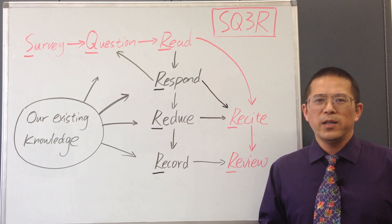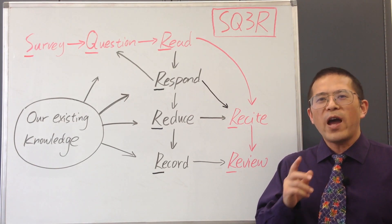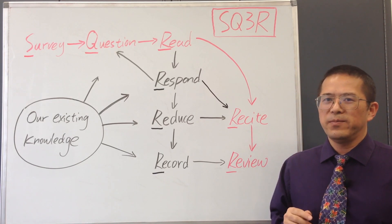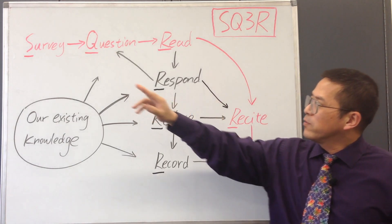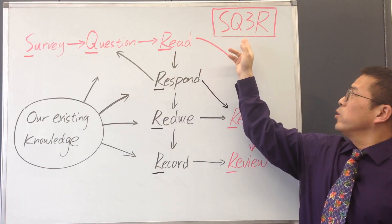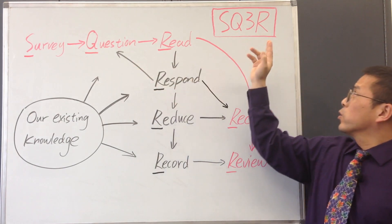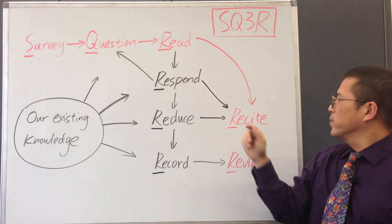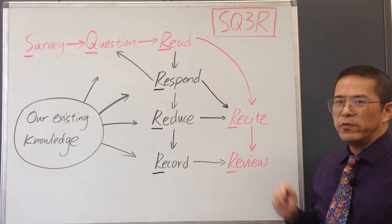SQ3R is an acronym for five steps to effectively read and learn. S stands for Survey. Q stands for Question. The three R's are Read, Recite, and Review.